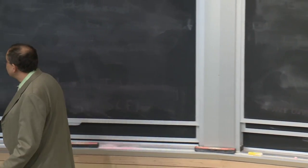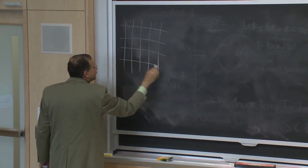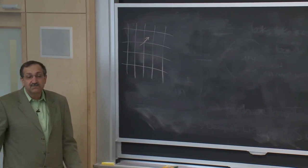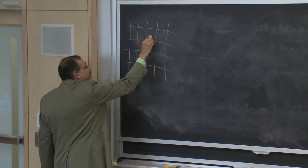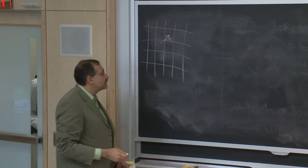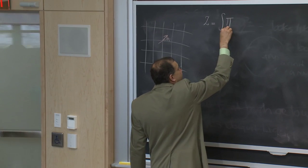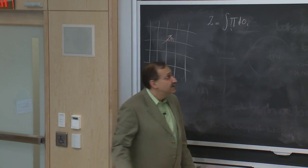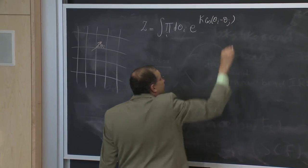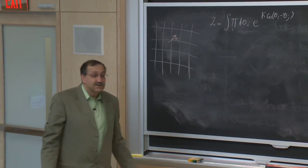We've been looking at the XY model in two dimensions. It is a collection of unit spins located on a site of a lattice in two dimensions. Since they are unit vectors, each one of them is characterized by an angle theta_i. The partition function is obtained by integrating over all angles with a weight that has the form k cosine of theta_i minus theta_j — a coupling corresponding to the dot product of neighboring spins written in cosine form.